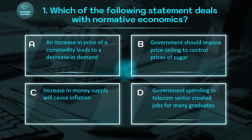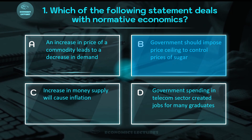Option B: government should impose a price ceiling to control prices of sugar — this is an opinion. When there is opinion, this is normative economics. And normative economics is usually related to welfare economics. So Option B is the correct answer. I hope you have liked this concept.